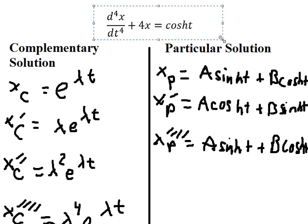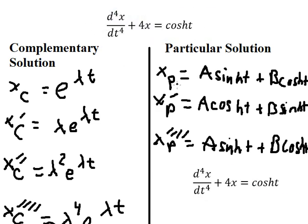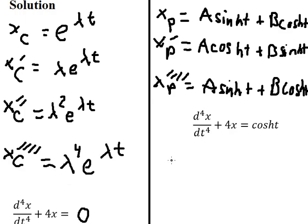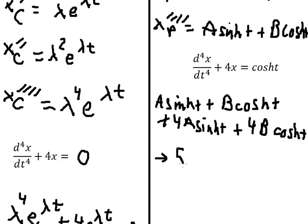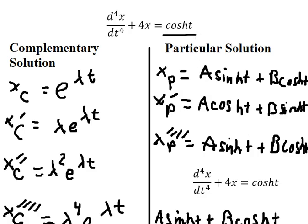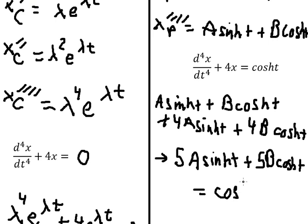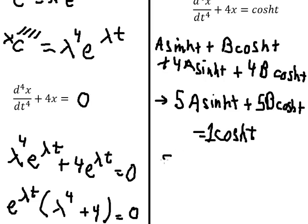Substituting into the equation, we highlight the matching terms. We get A sin t plus B cos t plus 4A sin t plus 4B cos t. Simplifying gives us 5A sin t plus 5B cos t. Since the right-hand side has only cosine t with a coefficient of 1, we match coefficients: the coefficient of cos t gives 5B equals 1.